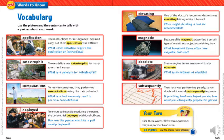The next word is 'catastrophic.' The mudslide was catastrophic for many towns in the area. If you look at the picture of the mudslide, you can see that there is a disaster — it is catastrophic, it is disastrous. The third word is 'computations.' They performed computations using the data collected to monitor progress.